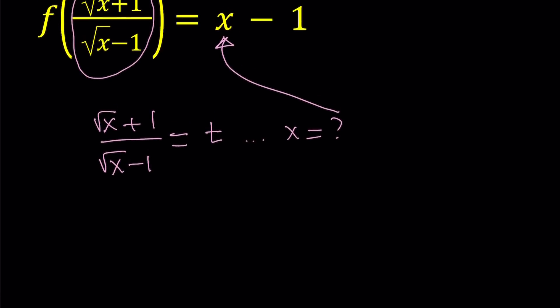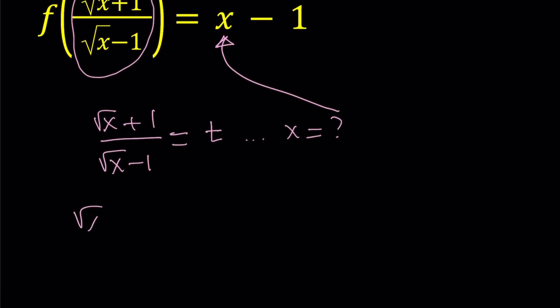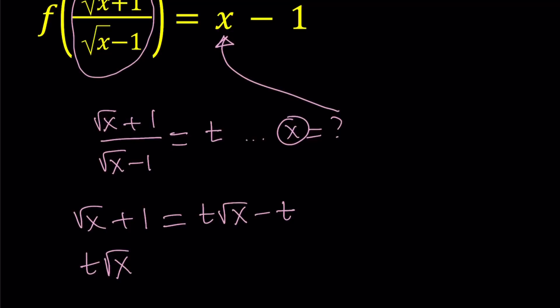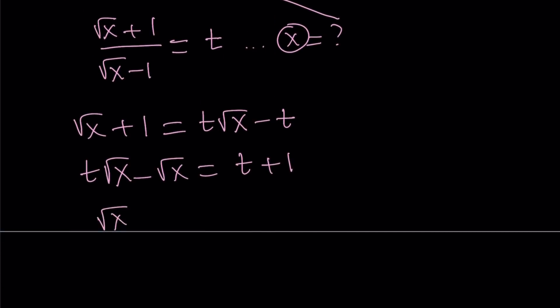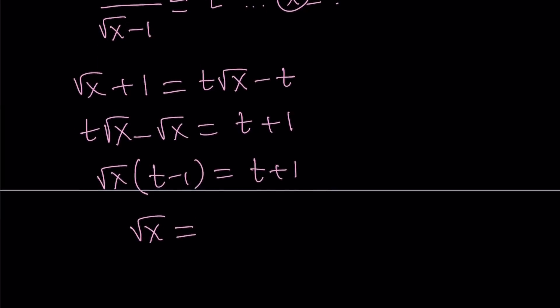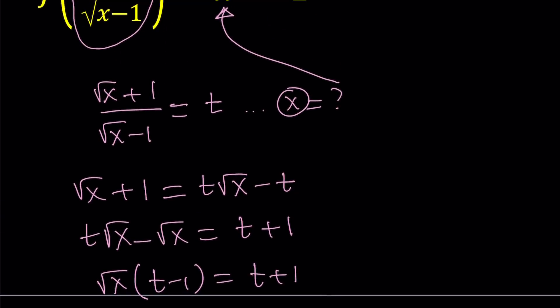Let's go ahead and do it. To be able to do this, we cross multiply, and that gives us square root of x plus 1 equals t times the square root of x minus t. Our goal is to solve for x, so let's put everything containing x on the same side: t square root of x minus square root of x equals t plus 1. Factor out square root of x, and you'll get square root of x times t minus 1 equals t plus 1. Then divide both sides by t minus 1. This tells us that t should not equal 1 — and indeed it can't be, because square root of x plus 1 and square root of x minus 1 are two numbers that are two apart, so there's no way they can be equal.